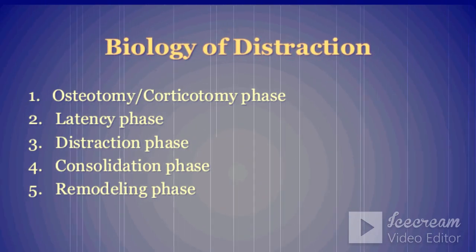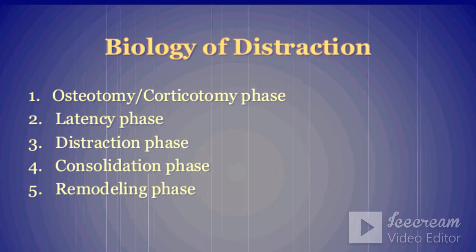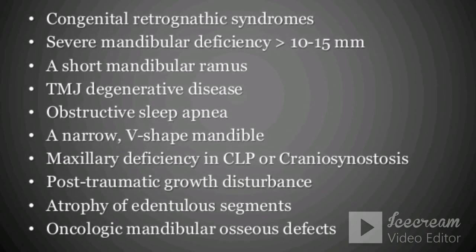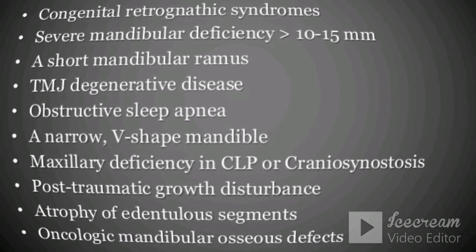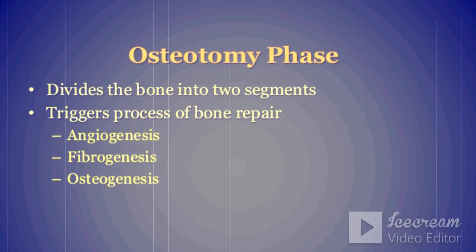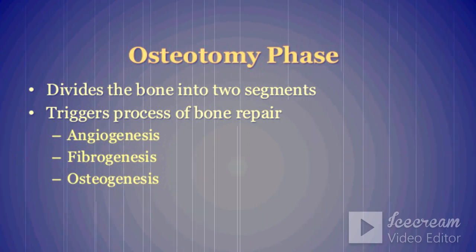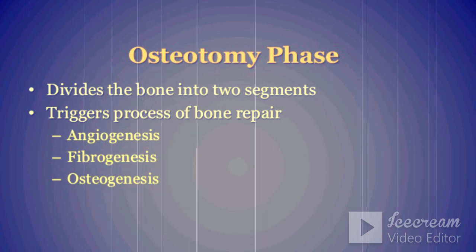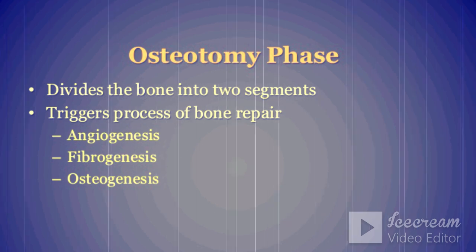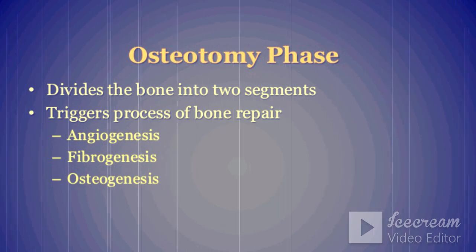Distraction osteogenesis can be divided into five treatment phases. The first is the surgical phase. A minimum amount of periosteum should be dissected from the bone for placement of the distraction device. The device is first positioned and fixed to the bone according to the treatment plan. The osteotomy line is then accurately marked and the device removed. The osteotomy is then performed through the cortex of the bone, taking care not to damage any underlying structures such as the tooth roots, nerves, and blood vessels. The osteotomy through the cancellous bone is completed, and mobility of the bone segments is carefully tested. The distraction device is replaced and fixed, and its functionality is tested by activating the driver, ensuring movement of the segments while avoiding injury to underlying structures.